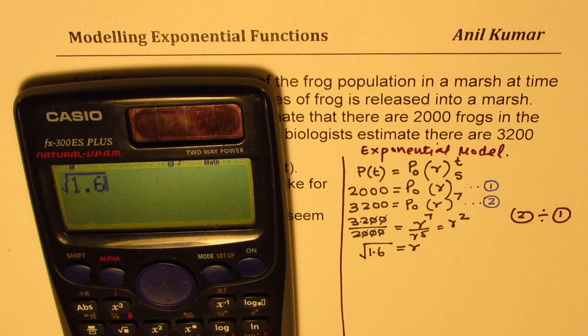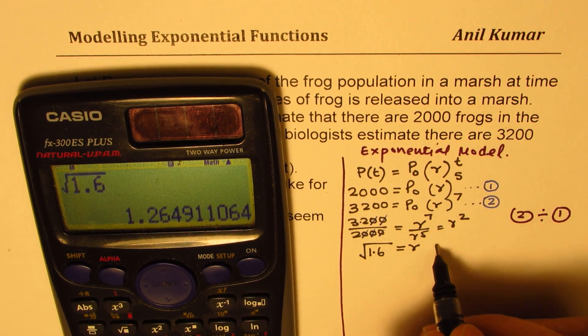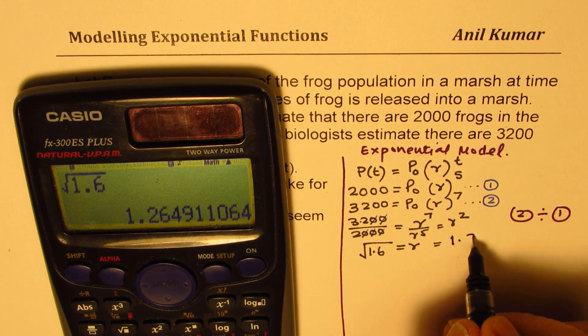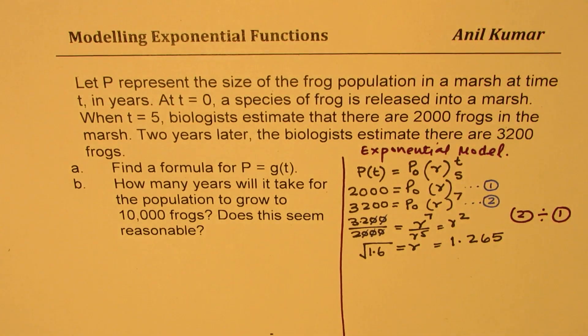Square root of 1.6 is equal to, in decimals, 1.265, let us say. Okay. So that becomes the rate of growth, 1.265.